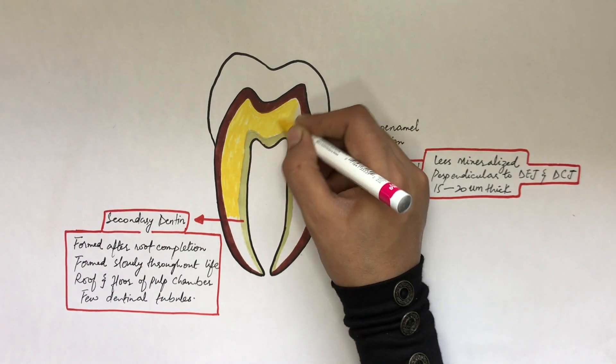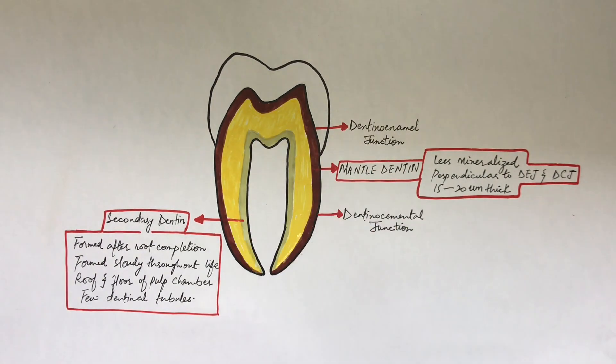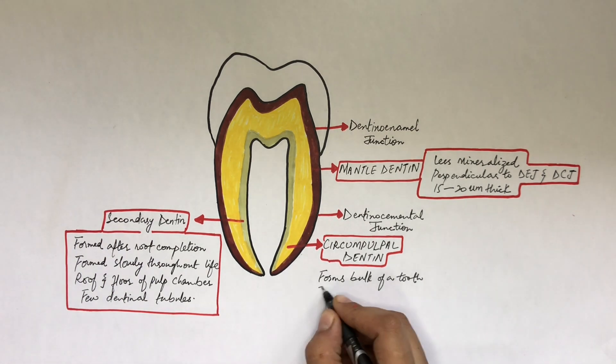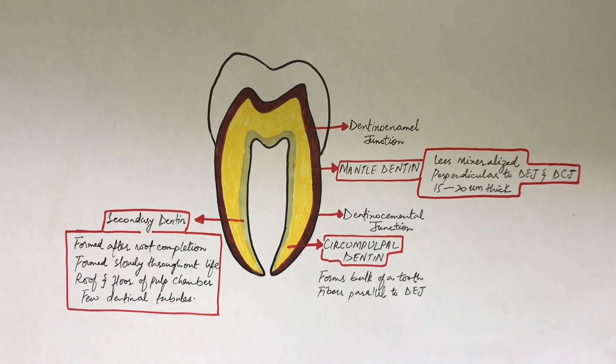The circumpulpal dentine is the part of the dentine lying between the secondary and the mantle dentine. It forms the bulk of a tooth. Its fibers are parallel to the dentino-enamel junction. It has the maximum number of dentinal tubules and is highly mineralized when compared to other types of dentine.